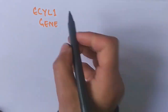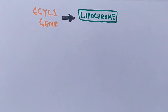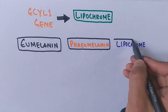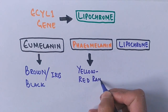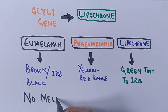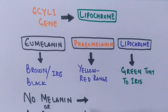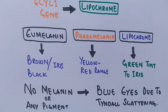Another gene contributing to eye color is ECYL1, present on chromosome 19, which creates a pigment called lipochrome. So there are three pigments present in the iris: eumelanin, pheomelanin, and lipochrome. Eumelanin gives brown or black iris color; pheomelanin gives a range between yellow and red; and lipochrome gives a green tint to the iris. When no pigment is produced, eye color depends entirely on light scattering in the stroma — most often giving blue eyes through Tyndall scattering, or gray eyes through Mie scattering when larger collagen deposits in the stroma reflect light from the epithelium.